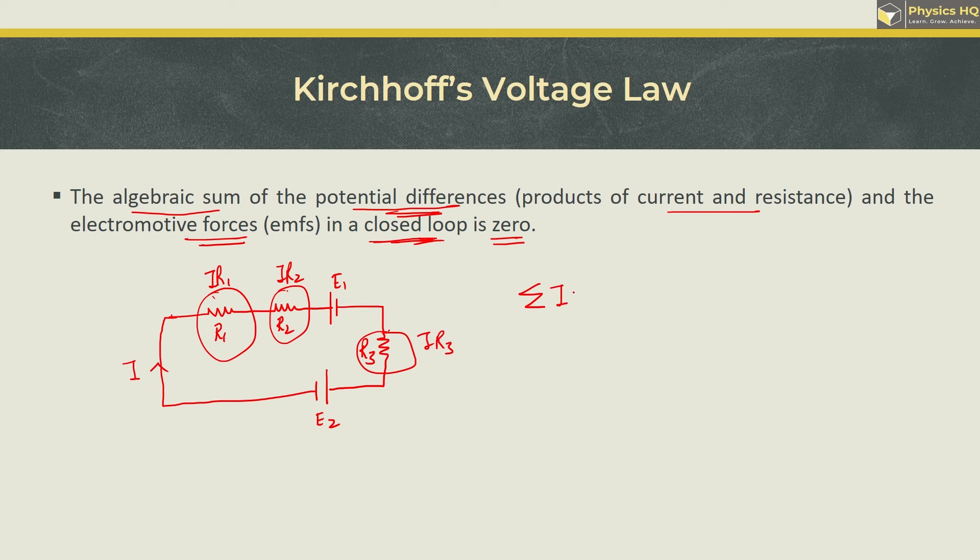So KVL says that the summation of all potential differences, I into R, plus the summation of all EMFs equals zero. The summation of IRs will be these terms, and the summation of EMFs will be E1 and E2. Now the signs will be plus or minus. Let's understand the sign convention.